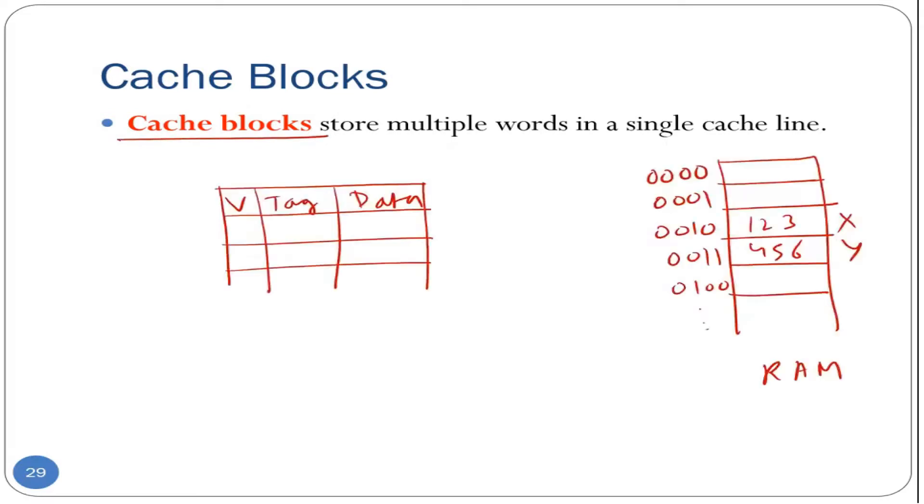Let's recall the cache model that we are using so far. We are assuming that our caches have basically these three fields: there is a valid bit, there is a tag field and a data field. And essentially, our cache is an array of several rows organized in some form of a table.